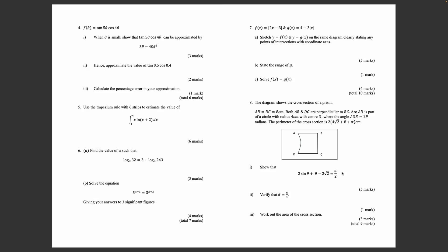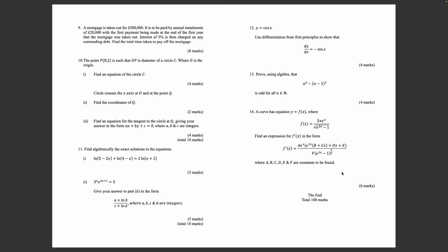Question 9: A mortgage is taken out for £500,000. It is to be paid by annual installments of £20,000, with the first payment being made at the end of the year that the mortgage was taken out. Interest of 5% is then charged on any outstanding debt. Find the total time taken to pay off the mortgage.